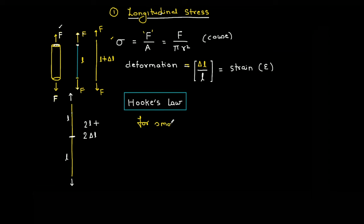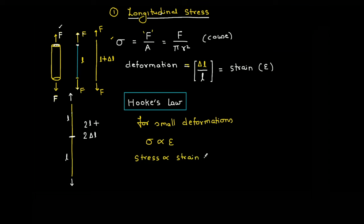Deformation is not delta L and it is not L alone — it is delta L by L. For small deformations, there was a scientist who told us that sigma is directly proportional to epsilon, where sigma is stress and epsilon is strain. So stress is proportional to strain. This is Hooke's law. You can find the proportionality constant by doing experiments, so sigma equals some constant times epsilon.